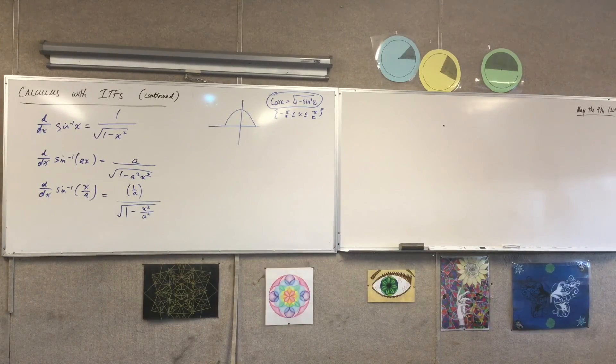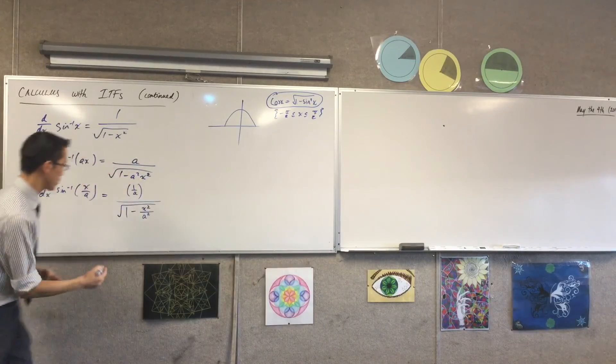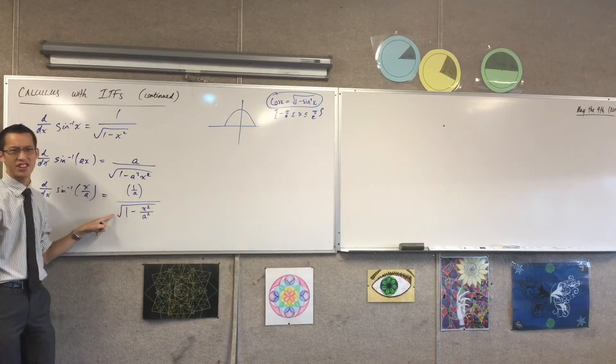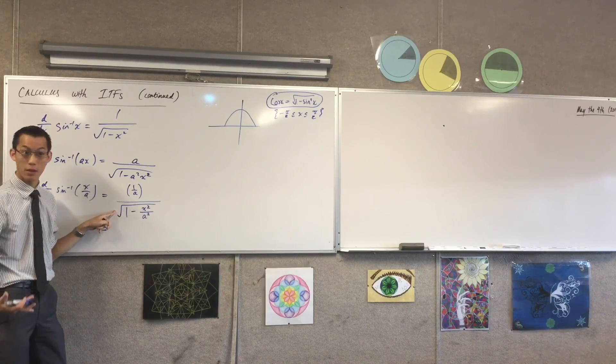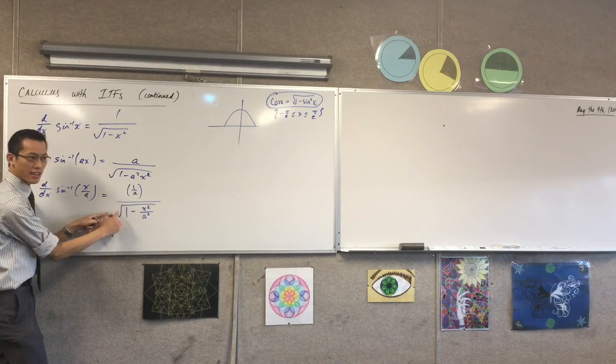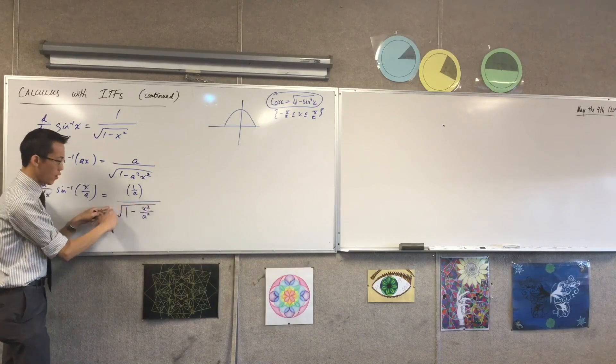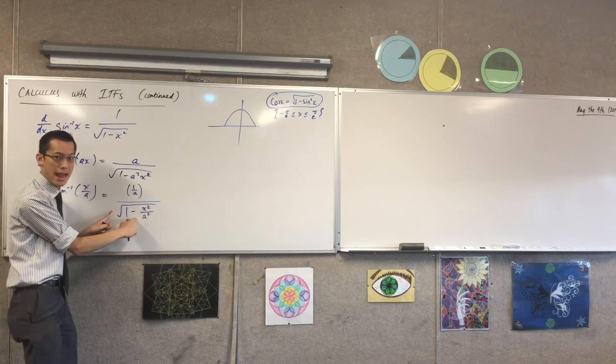So you can see, here I can do something further here and it will be useful to me, right? This over here, this 1 on a, is really an a on the denominator. Do you agree with that? Like having a fraction on the numerator is really multiplying on the denominator. But this a outside of the square root, I can bring it inside the square root. Do you see that? When the a moves from the outside to the inside, it becomes an a squared.